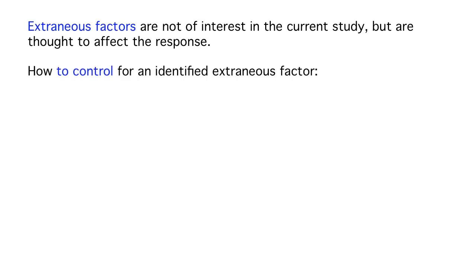To control for an extraneous factor, we have a couple of different options. The first option is to hold it constant. Say we think that the HPV vaccine might work differently on males and females — we can make the decision to study only females. If we think it might work differently in different age groups, we could choose to study only one particular age group. This limits the generalizability of the study, but it also eliminates the potential of having the extraneous variable confound the results.